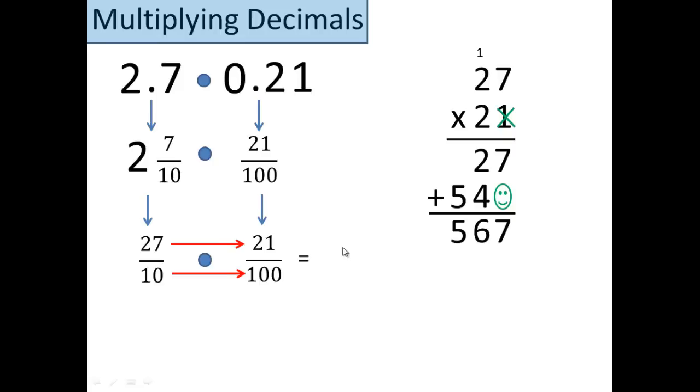That, if you bring back over here, becomes our new numerator. 10 times 100, you can do a scratch and mash, that'll get you 1,000. And check out what we just did. That 1,000ths is a decimal language. So it's very, very simple for us to take 567 thousandths and make it into a decimal. I just did it. 567 thousandths. So 2.7 times 0.21 is 0.567.